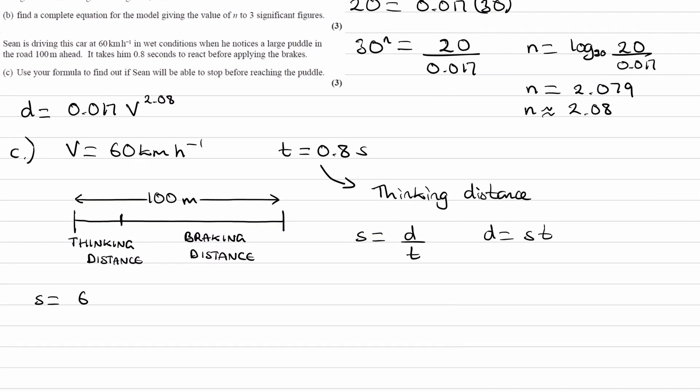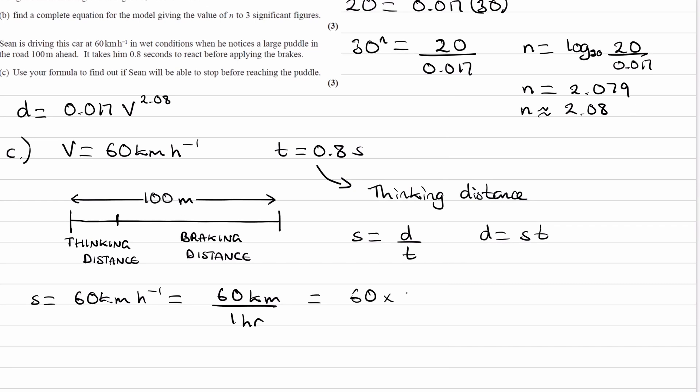So if the speed is 60 kilometers per hour, how we can convert this to meters per second is to break down the unit. So this is the same thing as 60 kilometers divided by one hour. And we can break down those two things. This becomes 60 times a kilometer in meters is a thousand meters, and an hour in seconds is 3600 seconds. So this becomes 16.67 meters per second, or as a fraction, let's keep that as 50 over 3 for our future calculations.